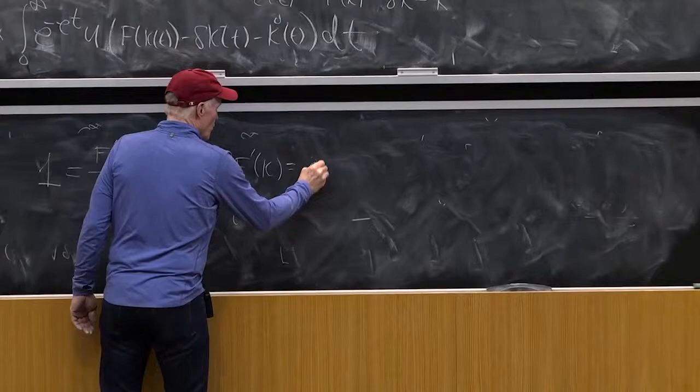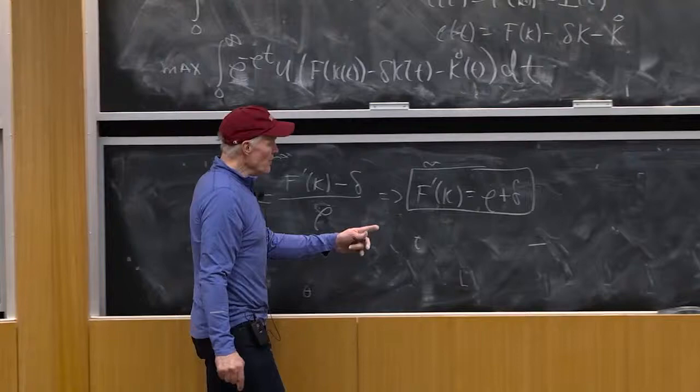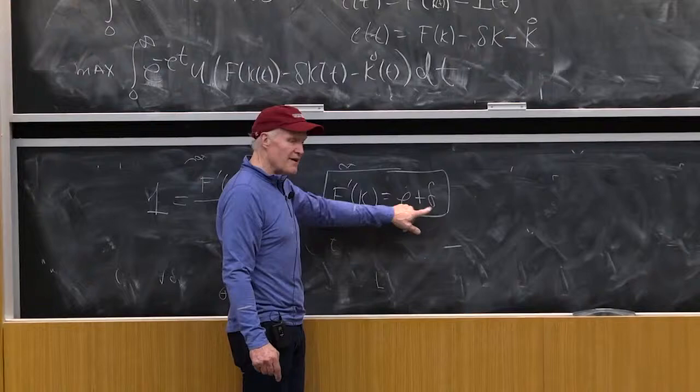Over rho equals 1, which implies f prime of k equals rho plus delta. It's going to tell me that the marginal product of capital has to be equal to the rate of time preference plus the depreciation rate. That's it. The marginal product of capital in equilibrium is only going to depend on these two numbers.